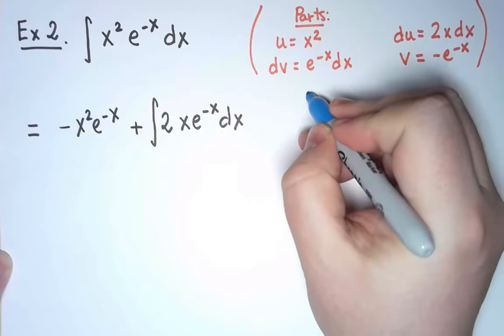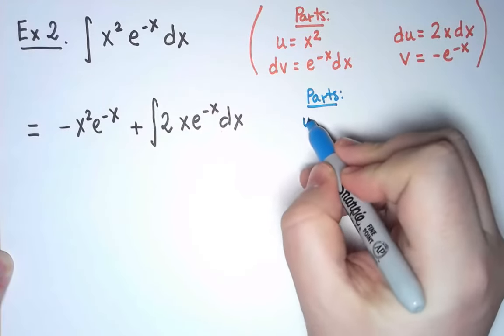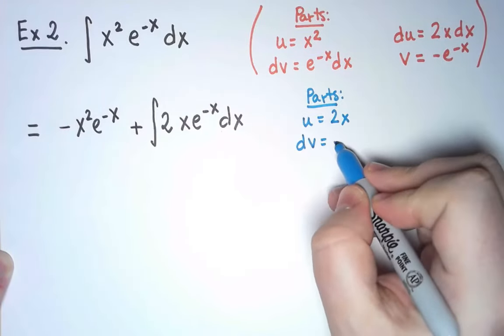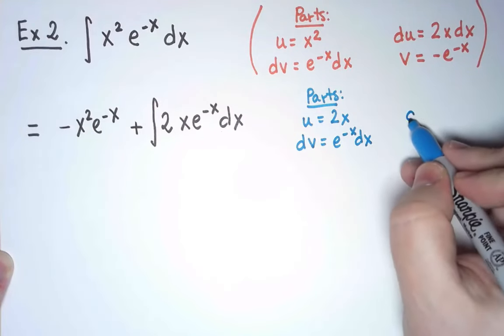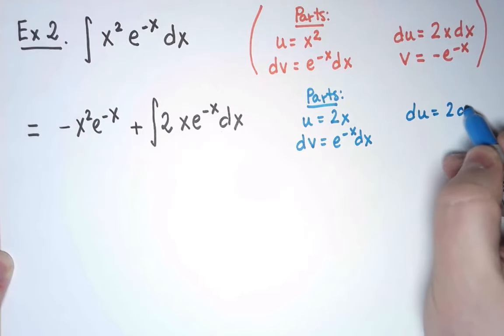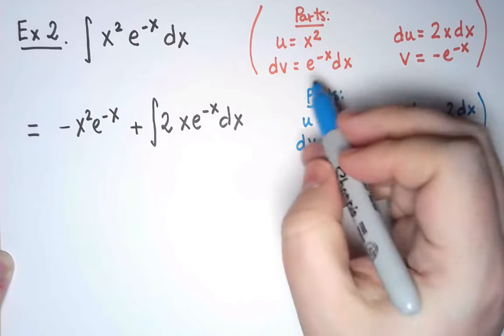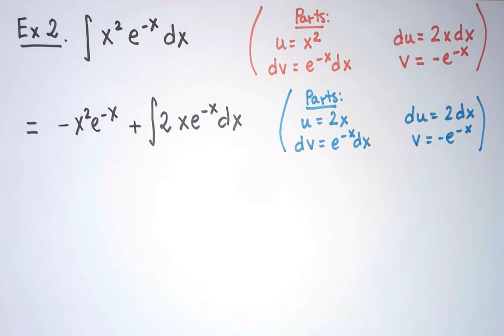This time, I will take u as 2x and dv as the rest. Then du will be 2dx, and v will be, again, minus e to the minus x. And let's see what I get.